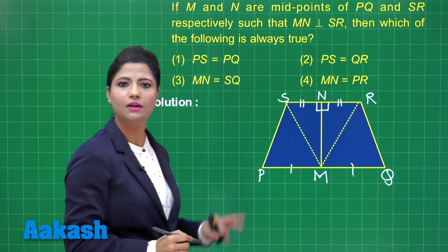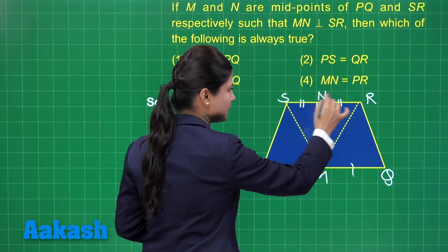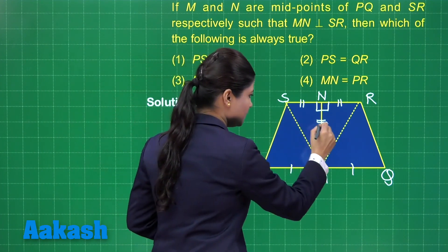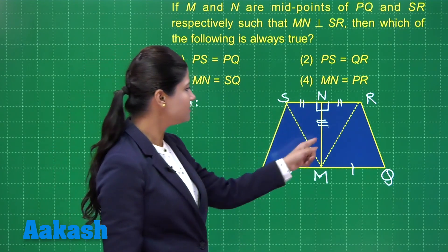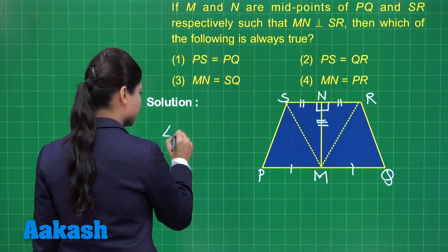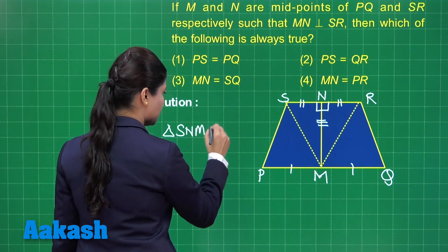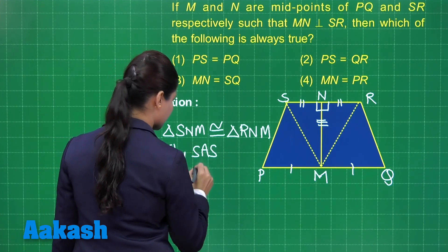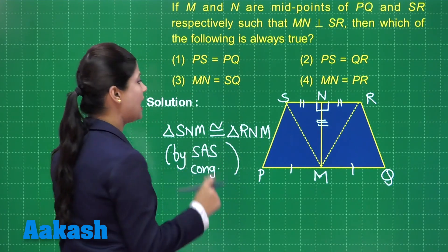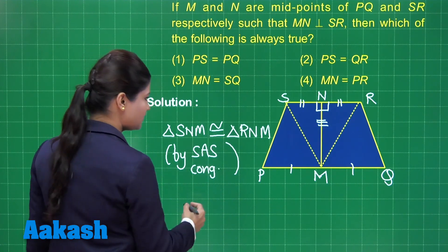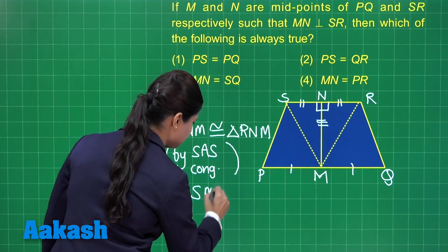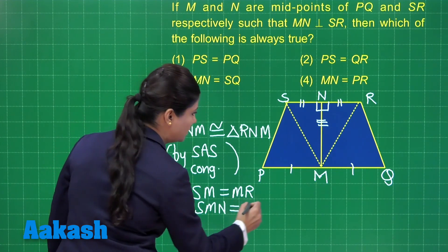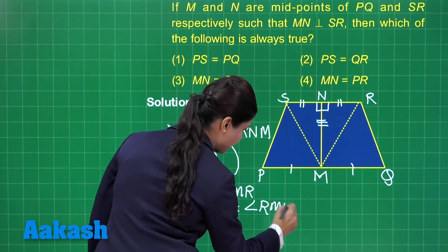Moreover, PM is equal to MQ since M is the midpoint. Now if you observe triangle SNM and triangle RNM: SN is equal to RN, these two angles are 90 degrees, and MN is the common side. So we have side-angle-side congruence criteria. These two triangles are congruent. Triangle SNM is congruent to triangle RNM by SAS congruence criteria.